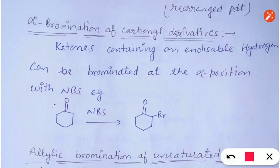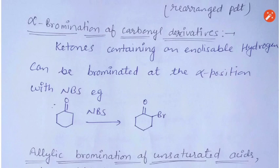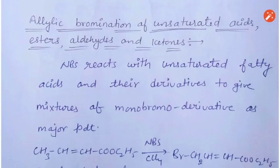Another reaction is alpha bromination of carbonyl derivatives. For example, a ketone with alpha hydrogens (also called enolizable hydrogens) can be brominated with N-Bromosuccinimide. In cyclohexanone, the alpha hydrogens can be substituted with bromine using N-Bromosuccinimide, forming an alpha-bromo ketone.